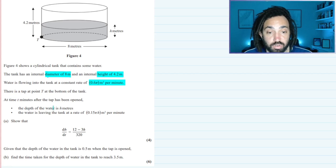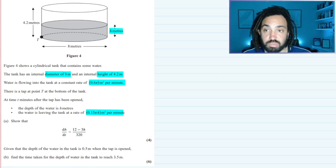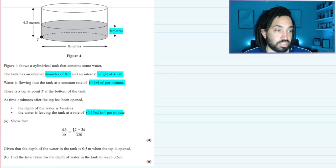The depth of the water is h. Okay yep we see that there is h there. The water is leaving the tank at a rate of 0.15πh per minute. Show that dh/dt is equal to this expression here.